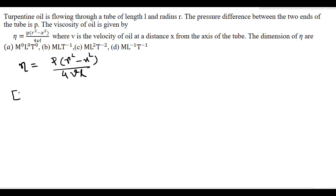To find the dimension of eta, that is [η] = [p]·[r² - x²] / ([4]·[v]·[l]).